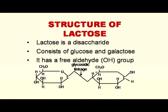As far as lactose structure is concerned, lactose is a disaccharide, meaning it is produced by the reaction of two monosaccharides or hexoses, which are glucose and galactose. They are linked together to form lactose. It has a free aldehyde group at the first carbon of glucose, and because of that, it reacts with Fehling's solution, which is the method used to determine lactose in milk and milk products.